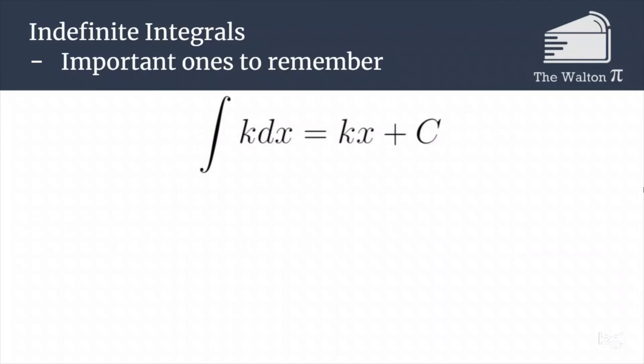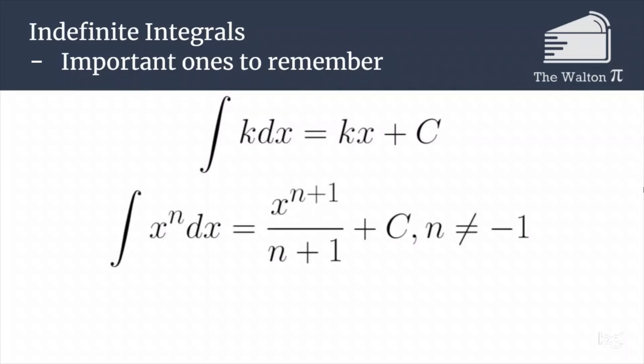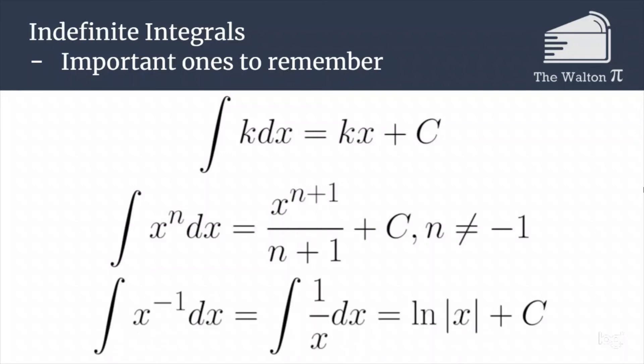The integral of k dx, a constant with respect to x, is equal to that constant times x plus C. The integral of x to the n is x to the n plus 1 over n plus 1, as long as n is not negative 1. If n is negative 1, that's the integral of 1 over x, which is the natural log of the absolute value of x plus C.